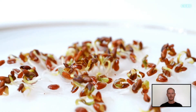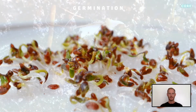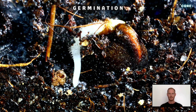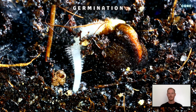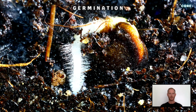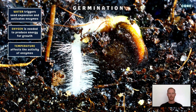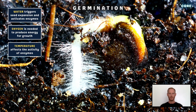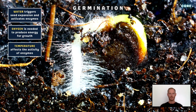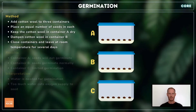Next, you need to investigate and describe the environmental conditions that affect germination of seeds. Germination is the process of development of a plant from a seed. The successful germination of seeds is dependent on a range of environmental factors, including water, oxygen and temperature. Water triggers seed expansion and activates enzymes. Oxygen is needed for the breakdown of stored food to release energy through respiration. And appropriate temperature conditions enable enzymes to function optimally.